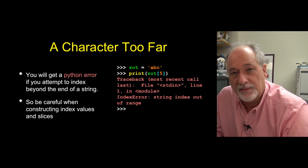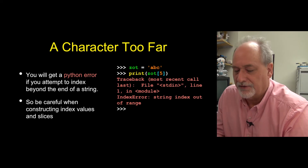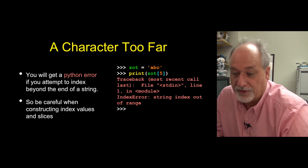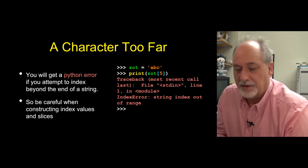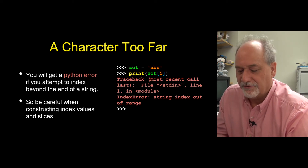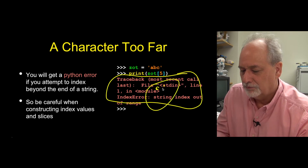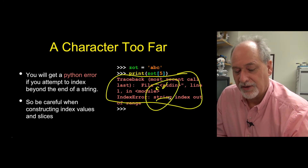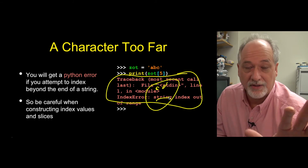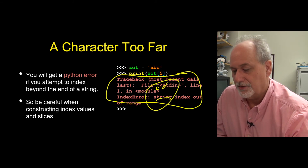You can't index beyond the length of the string. So if I say zot sub five, well there are only three characters — zero, one, two — sub five doesn't work, and of course we get a traceback. So you have to be careful when you're starting to pull stuff out of strings.